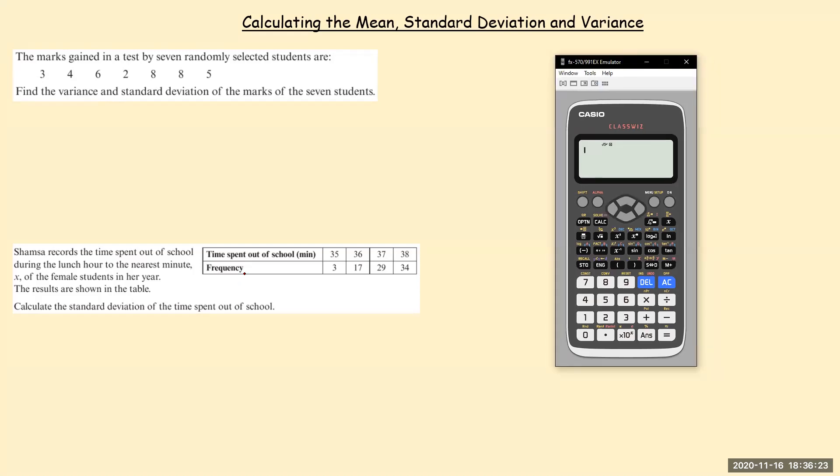I'll show you how to find the mean, standard deviation, and variance from raw data like this or grouped data, frequency table data like this. Obviously you can find these manually by hand using the formulas, but I'm just going to focus on how you do this using the calculator.